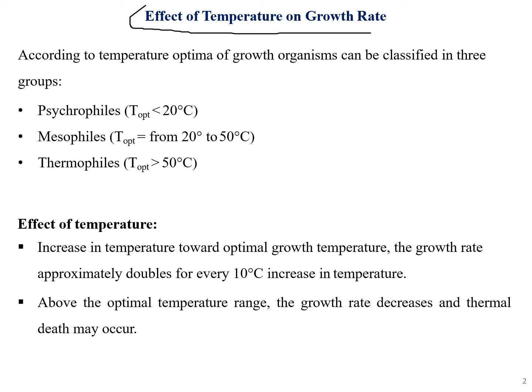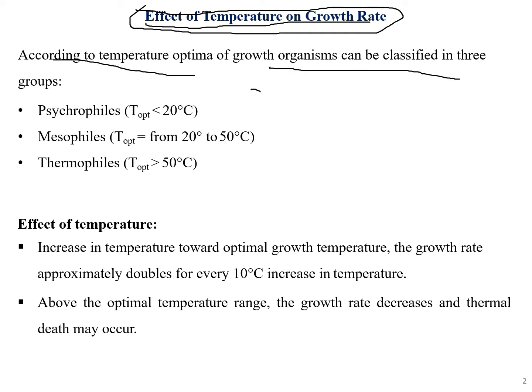We'll first talk about the effect of temperature on growth rate. Previously we discussed graphs, various phases, and important properties, including kinetics and other transformations. Now we'll focus on factors that affect growth. According to temperature, organisms can be classified into three groups: psychrophiles, where temperature is less than 20°C; mesophiles, where temperature is between 20 to 50°C; and thermophiles, rare bacteria which can survive above 50°C.